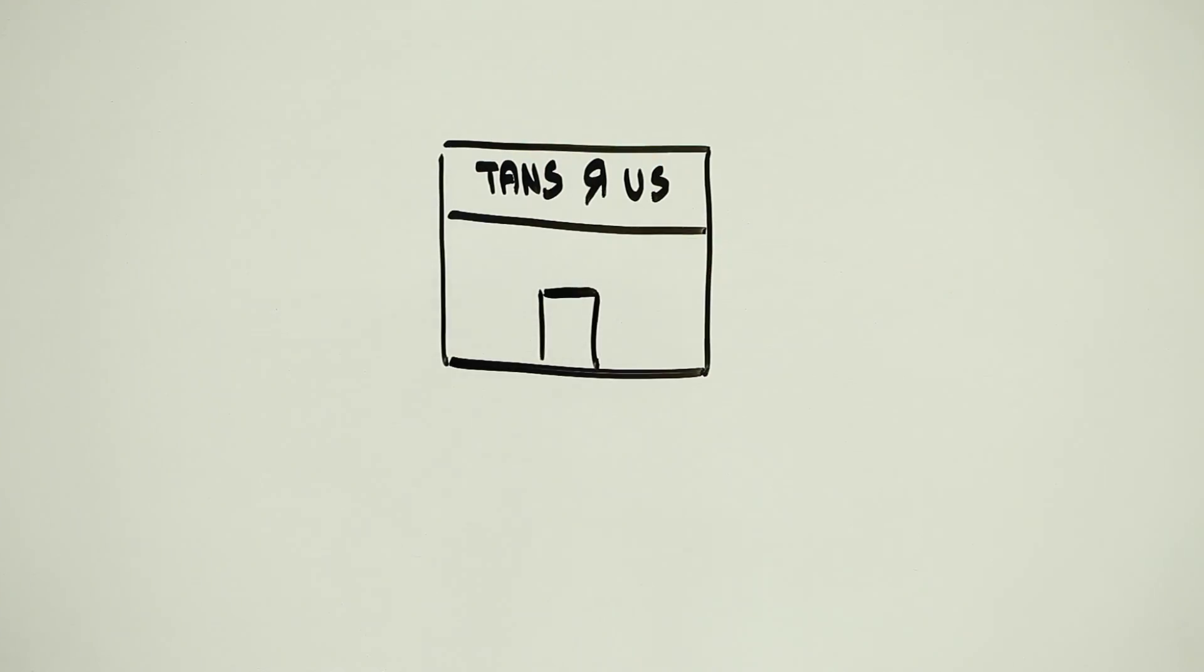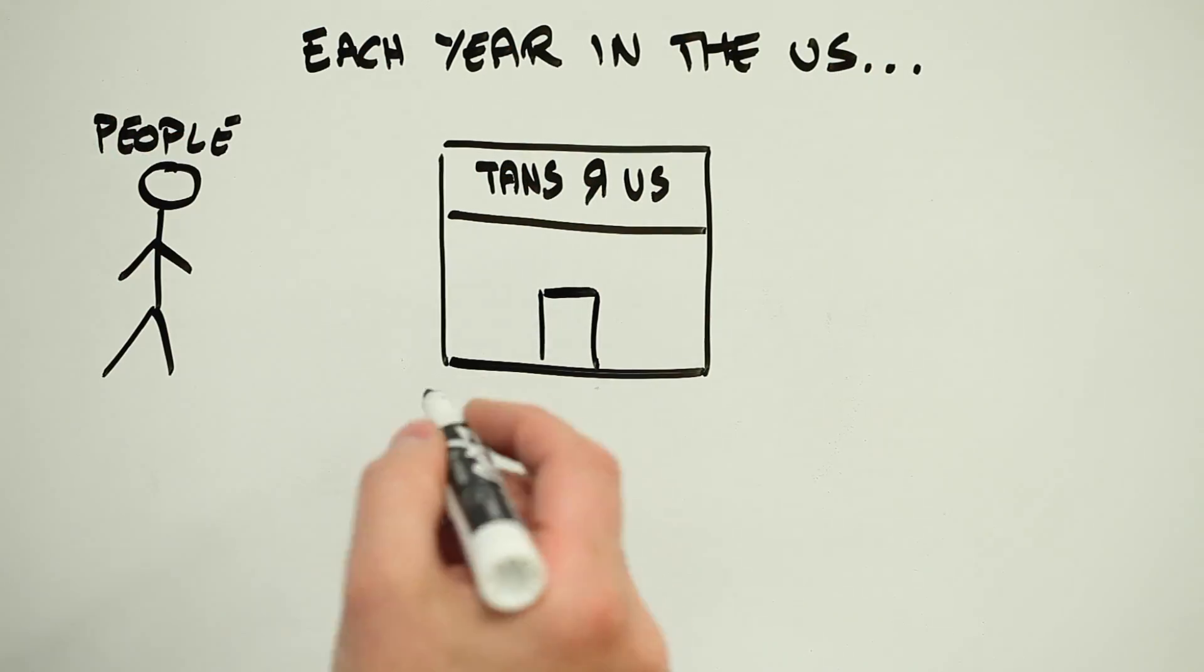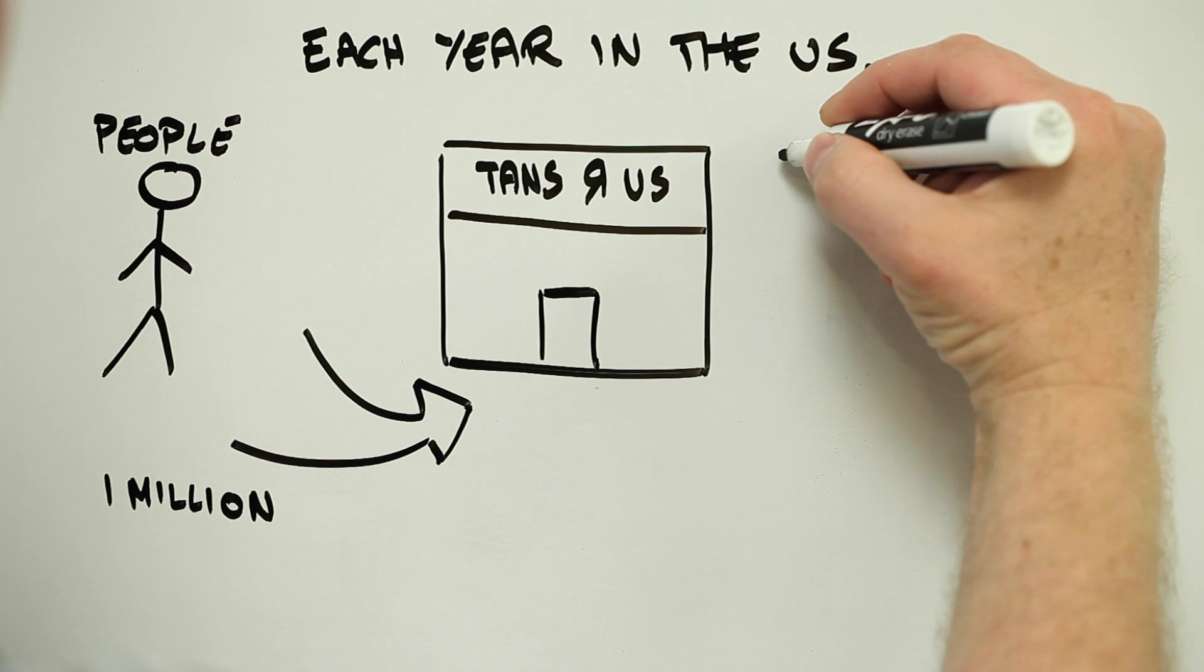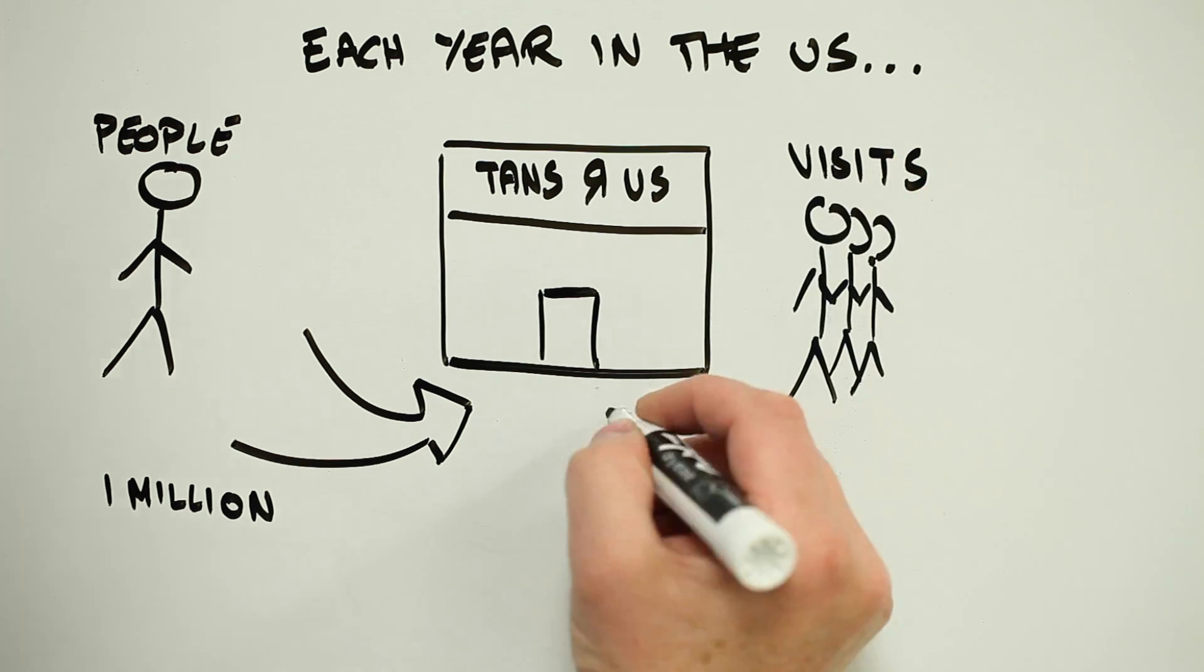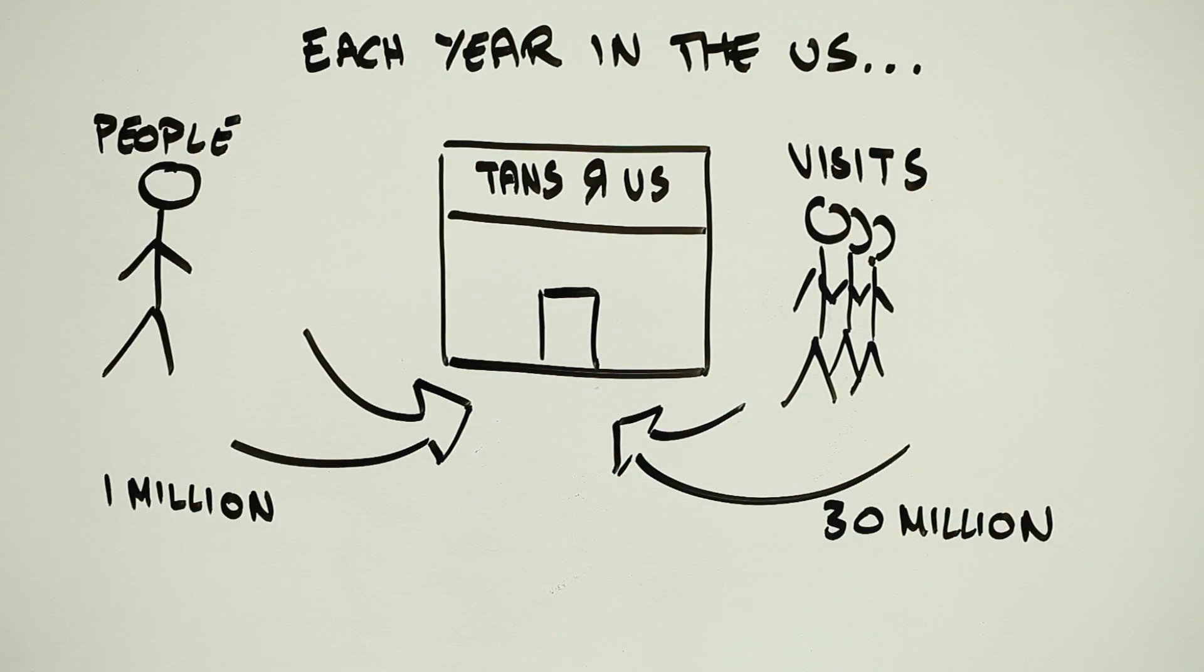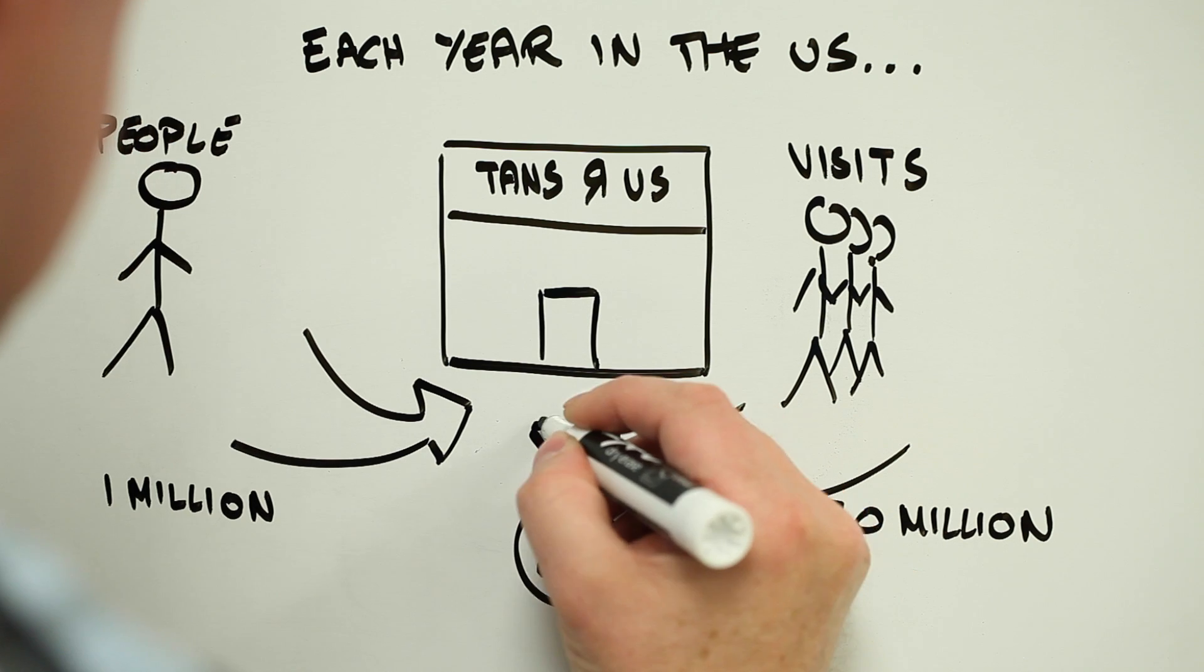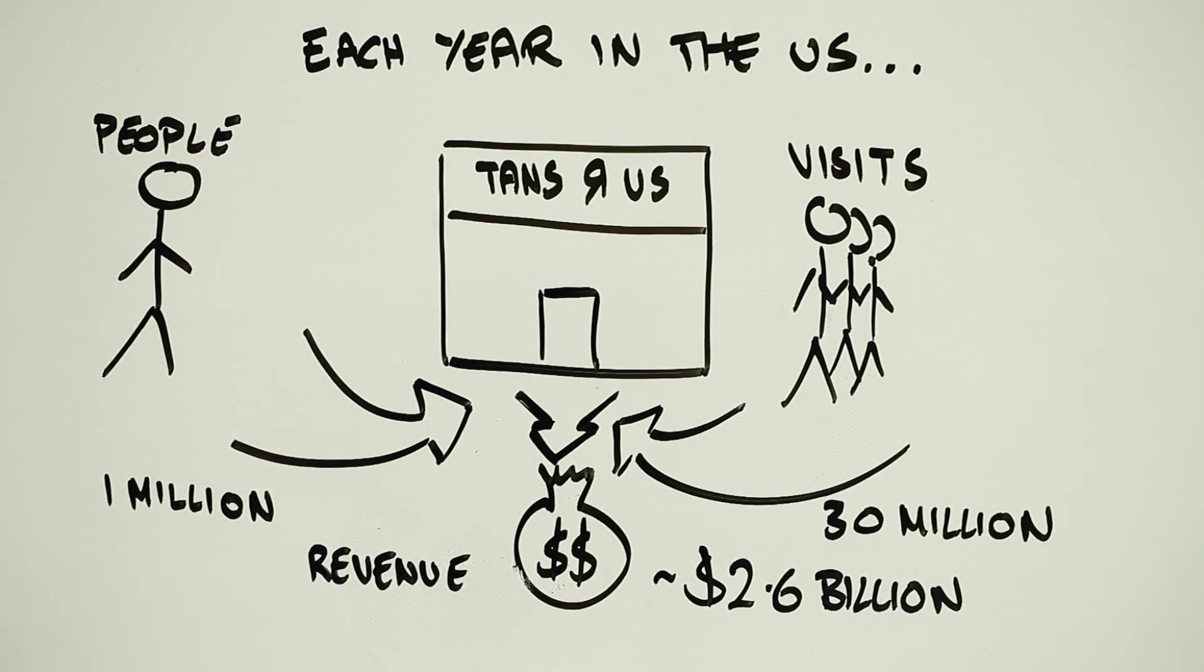Artificial tanning is big business. In the US alone there are around 30 million visits to tanning salons each year. It's an easy way to get what some people consider a healthy glow. Rather than going to the trouble of exposing yourself to the sun itself, which can be fickle and harmful if you get too much of it, you simply spend some time sitting, standing or lying in front of sun lamps.